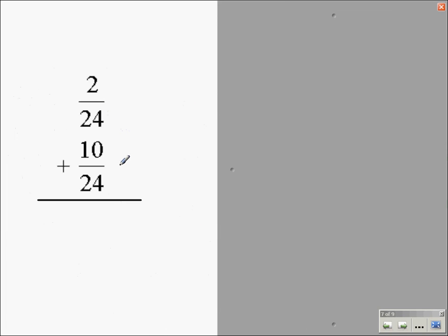Here, I have 2/24 plus 10/24. Well, since the denominators are the same, I don't need to make any changes, and I bring my denominator straight down. I'll add my numerators, 2 plus 10, which gives me 12.